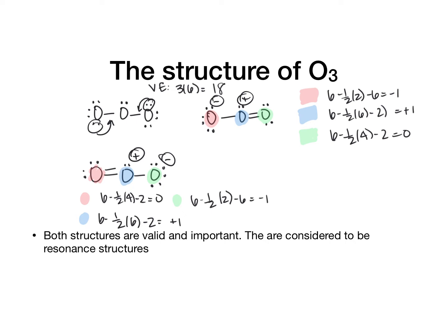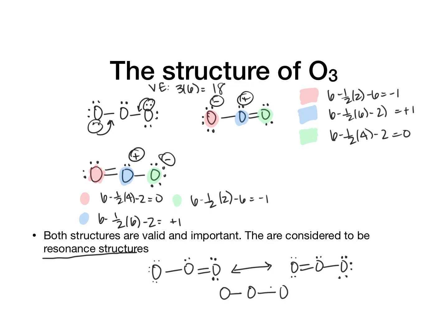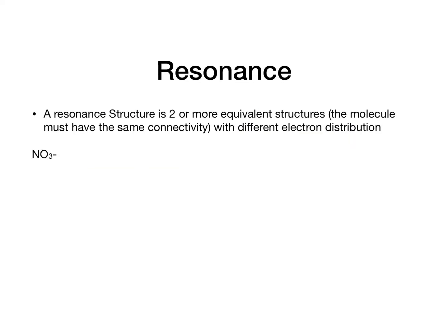It turns out that both are valid and important — they are called resonance structures. What we see in reality is a mix between the two structures, flip-flopping back and forth. You can draw a hybrid structure showing partial double bonds to both terminal oxygens. A resonance structure is two or more equivalent structures where the molecules have the same connectivity — the atoms are in the same place — but they have a different electron distribution.